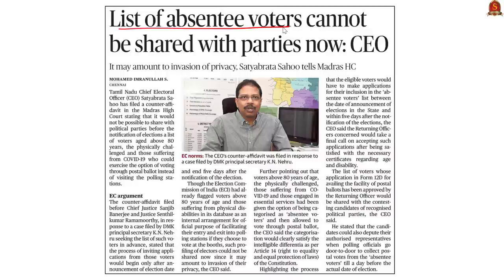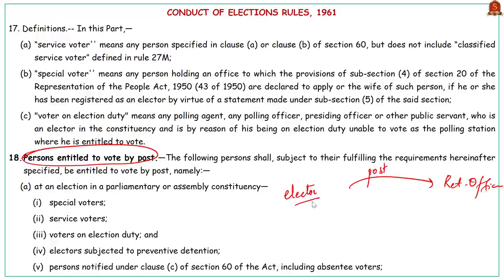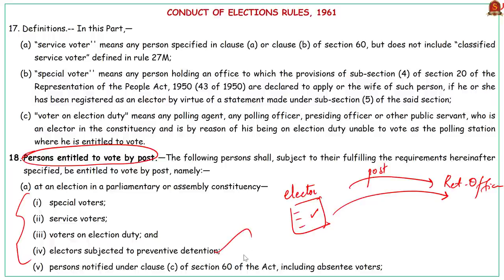Under the Conduct of Election Rules 1961, certain categories of electors have been given the provision to vote by postal ballot. Postal ballot is a type of voting whereby ballot papers are distributed to and returned by voters through post. Categories entitled to vote by postal ballot include special voters, service voters, voters on election duty, electors subjected to preventive detention, and persons notified under Section 60C of RPA 1951 — including absentee voters.